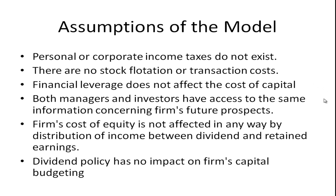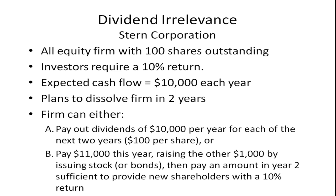Let's take a look at an example. Suppose we have Stern Corporation — an all-equity firm with 100 shares outstanding. Investors require a 10% return, expected cash flow is $10,000 each year, and the firm plans to dissolve itself in two years. The firm can pay dividends of $10,000 per year for each of the next two years, paying out all expected cash flow as dividends. Since there are 100 shares, that's $10,000 divided by 100, which is $100 per share.